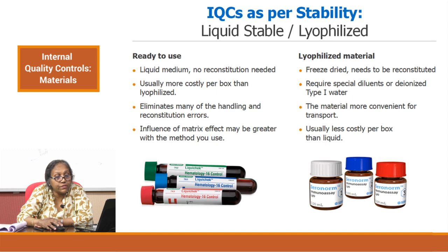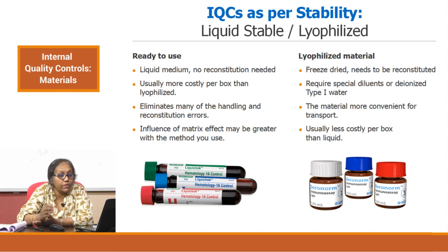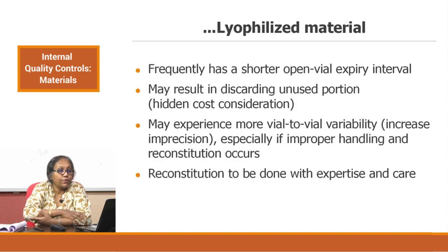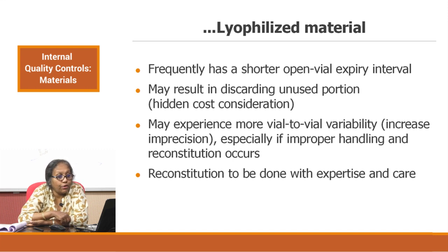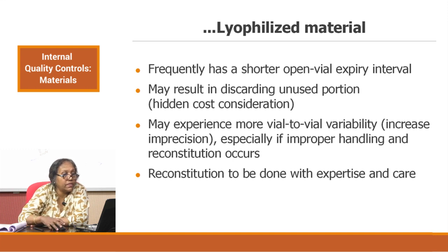Lyophilized material, on the other hand, is freeze-dried and needs to be reconstituted. It requires special diluents or deionized type 1 water — generally injection water is used. The material is more convenient to transport because it is in powder form, and it is usually less costly per box than liquid controls. However, lyophilized control material frequently has shorter vial open stability and may result in discarding of unused portions. Additionally, there may be more vial-to-vial instability, which increases imprecision especially if improper handling or reconstitution errors occur.